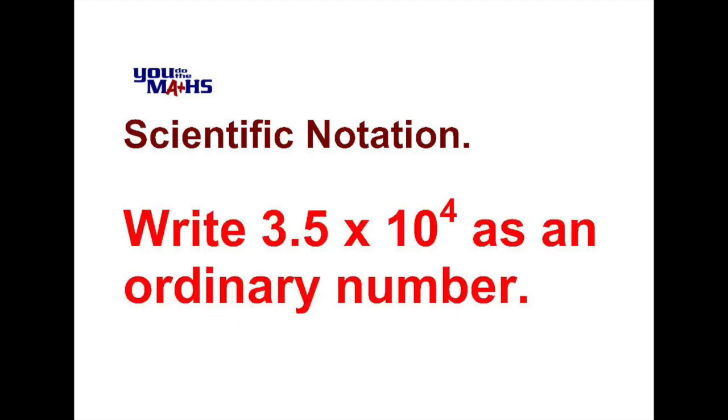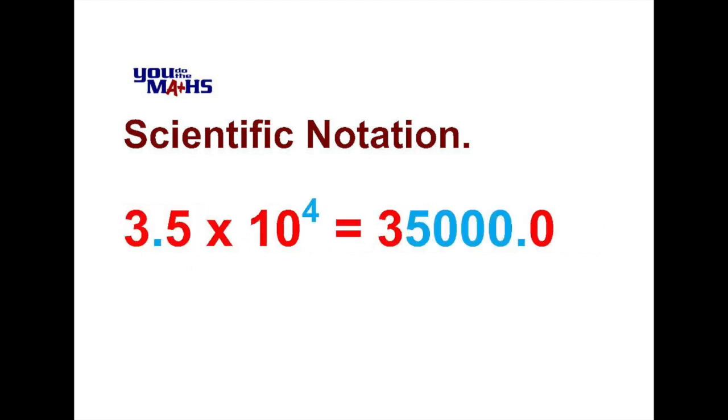Now let's go back to our original example which was to express 3.5 times 10 to the 4 as an ordinary whole number. We can see here that the power of 10 is a 4, so the decimal point is going to move four positions to the right. We've done this in our answer by adding lots of zeros at the end. So we've got a solution of 35,000.